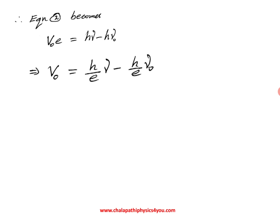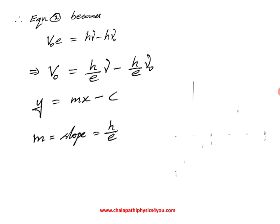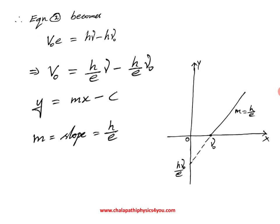Here stopping potential and frequency are both variables, while the rest are constants. Comparing this to y = mx + c, the slope of the straight line is h/e and the negative intercept is (h/e)μ₀. This can be analyzed graphically, and it exactly coincides with the experimental details. What Einstein analyzed theoretically exactly matches the experimental results. This is Einstein's Photoelectric Equation.